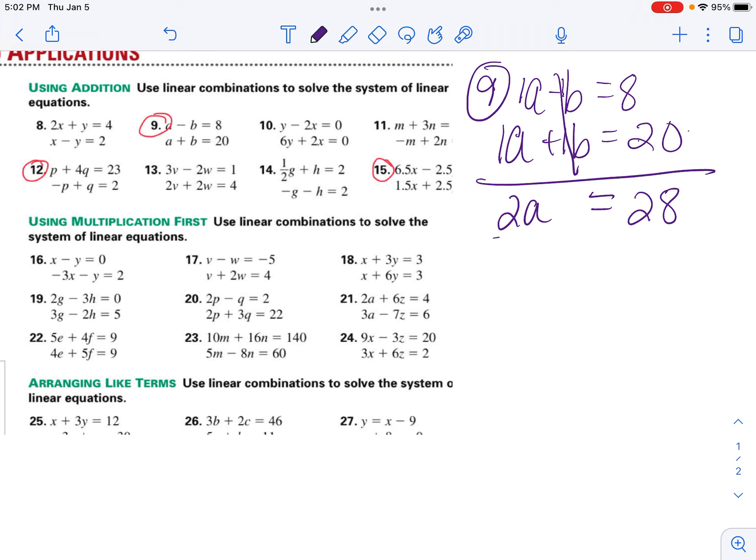All right, we need to get our a by itself. So the opposite of multiplying is dividing. So we're going to divide by 2, and that cancels this out. Gives me a equals 2 into 28 is 14.